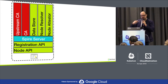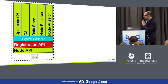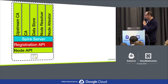Now we start registering things. We call the registration API — this is what you use to register the attestation policy, basically the mapping of what selectors you're using and what SPIFFE ID that relates to. Then it's stored in the data store where it's persisted.